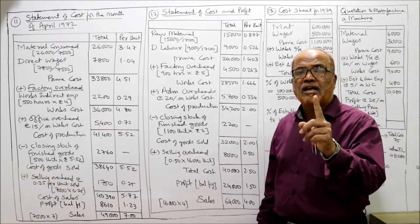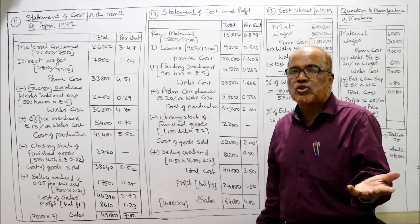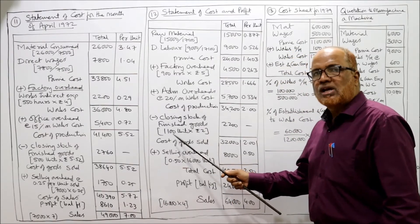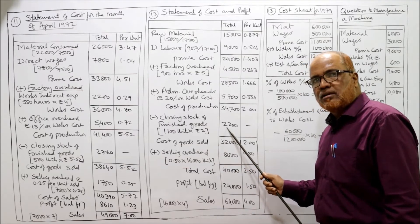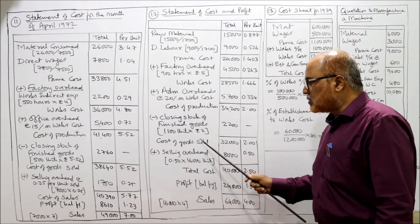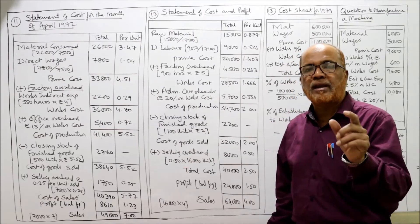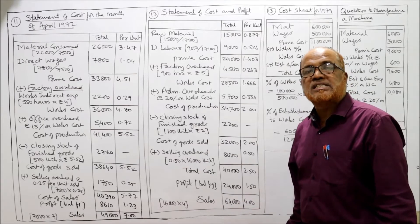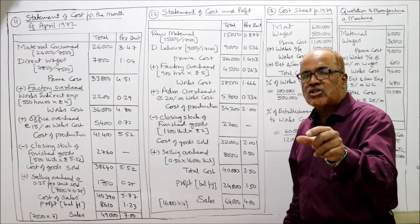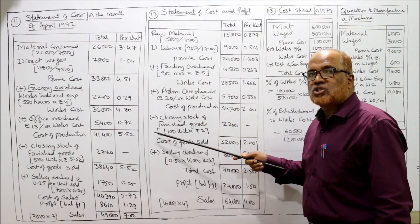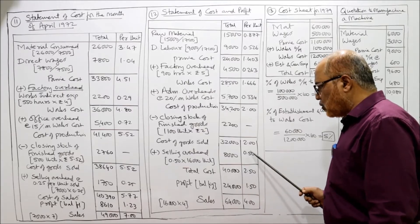Each unit has a cost of production of 2 rupees. There is no opening stock. Closing stock of finished goods: 1,100 units × 2 rupees = 2,200. Cost of goods sold = 32,000 at 2 rupees per unit. Selling overhead is 50 paisa per unit sold; 16,000 units sold × 0.50 = 8,000. Note: selling overhead is based on units sold, while cost of production is based on units produced. Total cost = 40,000 at 2.50 per unit.